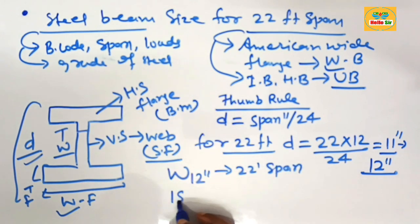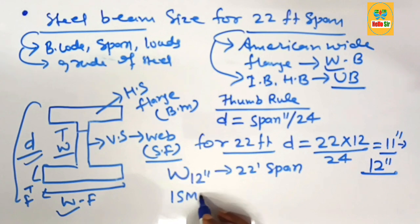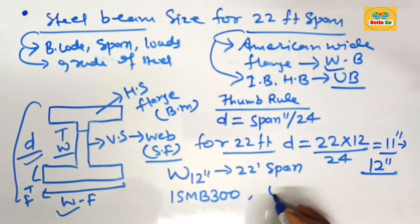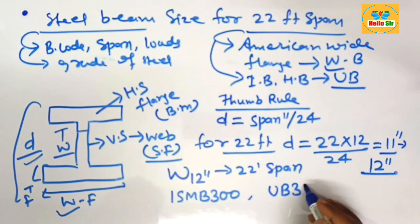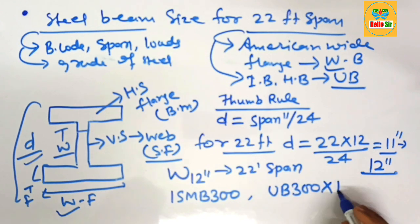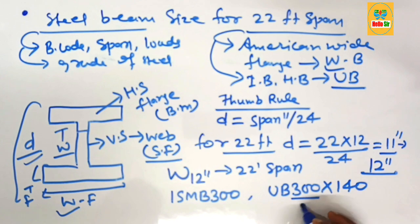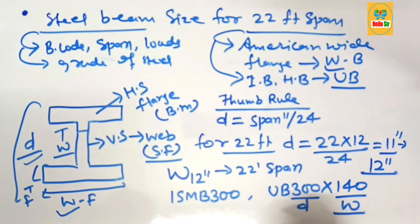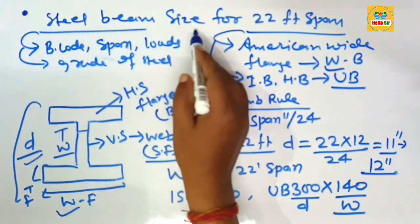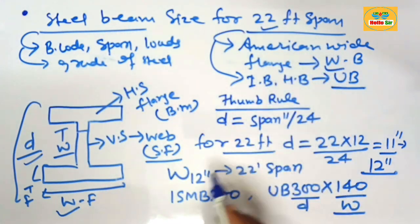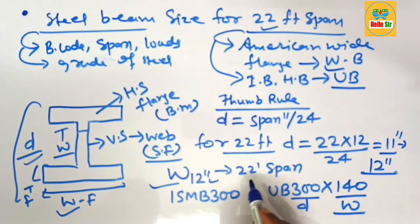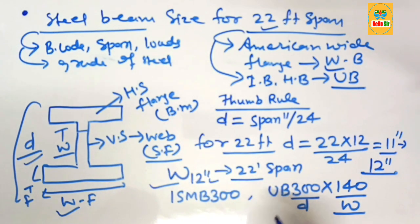As per other international practices, you may need an ISMB 300 beam or a UB 300x144. The 300 refers to the depth section of the beam, and the other value refers to the width section. So for a 22-foot span, you need an American wide flange beam with a depth of 12 inches.